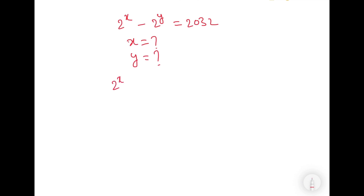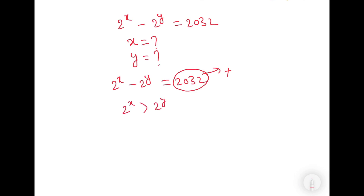2 to the power x minus 2 to the power y is equal to 2032. If we analyze this question, we can see that 2032 is a positive number, and this can be positive only when 2 to the power x is greater than 2 to the power y. This means the value of x should be greater than y. Therefore, we can write x is equal to y plus k.